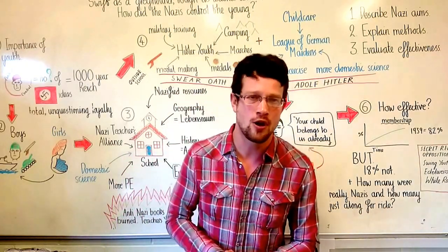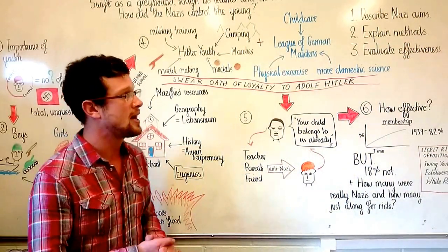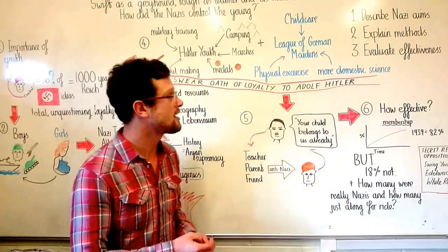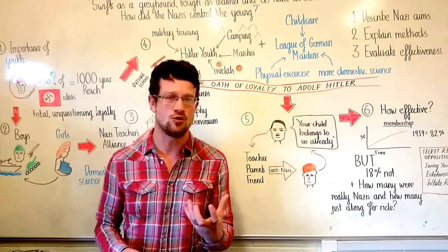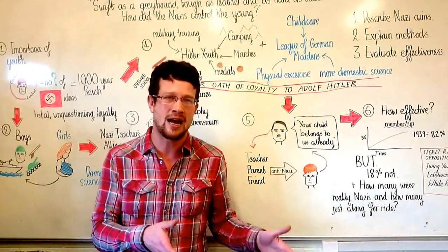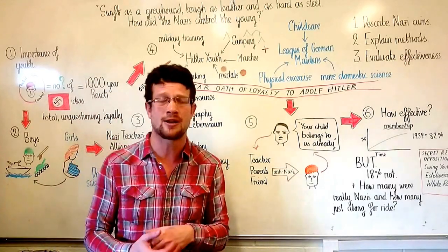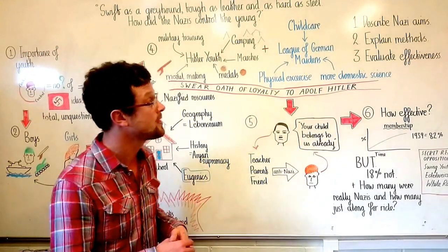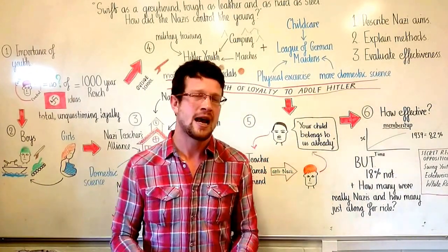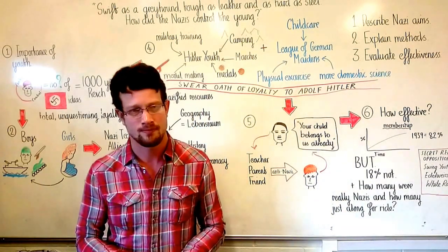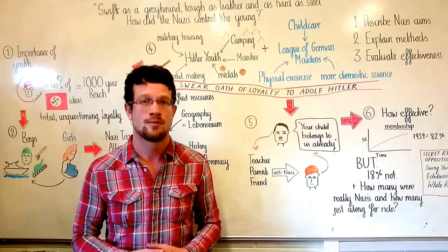So that's all, really. Let's review our focus questions and then we'll finish. Can you now describe the Nazi aims for young people? Secondly, can you explain the methods they used to try and get young people behaving the way they wanted them to? And thirdly, and you might have to do some extra research on this because we've just touched on it, can you evaluate the effectiveness? How total do you think Nazi control of young people was? Thank you very much for listening. More videos to follow.